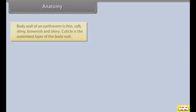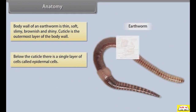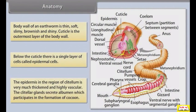The body wall of an earthworm is thin, soft, slimy, brownish and shiny. The cuticle is the outermost layer of the body wall. Below the cuticle there is a single layer of cells called epidermal cells. The epidermis in the region of the clitellum is very much thickened and highly vascular. The clitellar glands secrete albumin which participates in the formation of a cocoon.